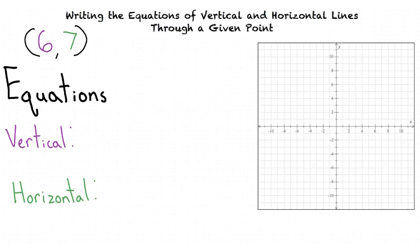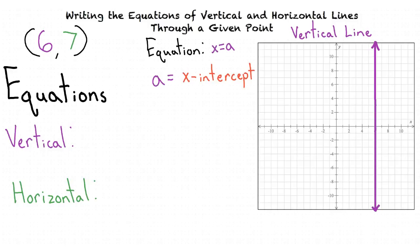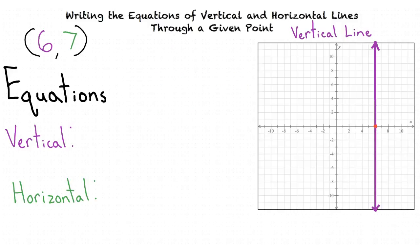What are vertical and horizontal lines? Great questions! A vertical line is parallel to the y-axis. In the case of our point, our vertical line would look like this. Its equation is always x equals a, where a is the value of the x-intercept of the line. In the case of our point, our x-intercept would be at 6.